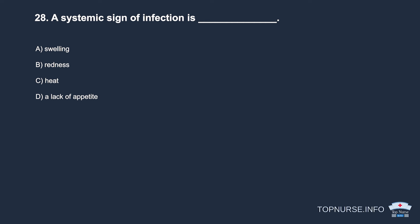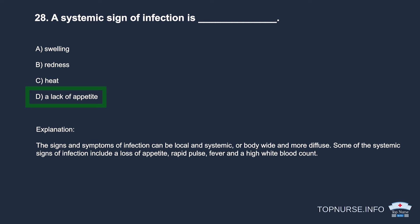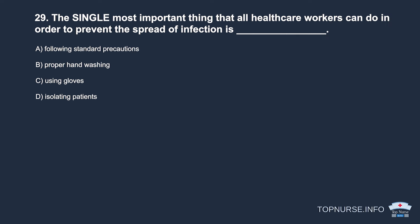Question 28: A systemic sign of infection is: a. Swelling. b. Redness. c. Heat. d. A lack of appetite. Correct answer: d. A lack of appetite. Systemic signs of infection include loss of appetite, rapid pulse, fever, and a high white blood count.